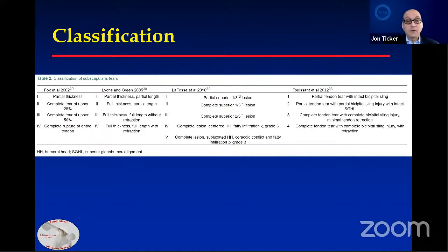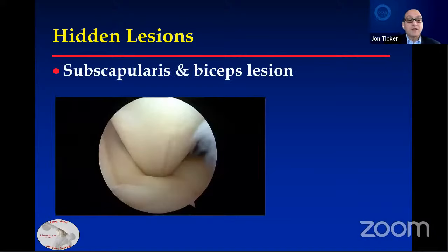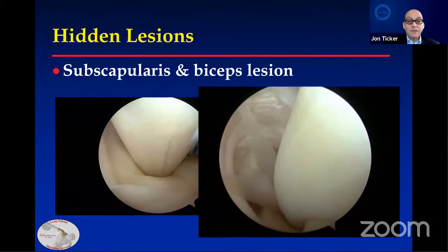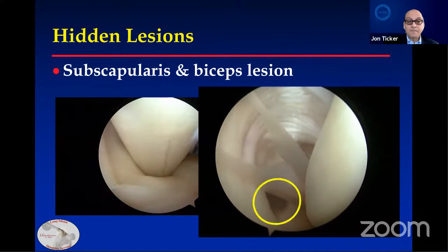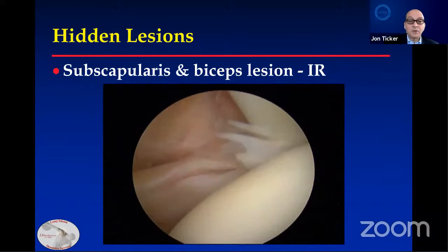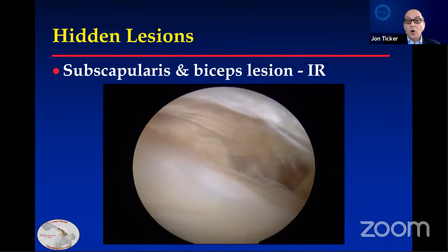Hidden lesions are important to identify. Looking at the biceps tendon into the groove — to the left is the subscapularis. You can see a little fraying under the biceps, which we would typically leave alone. But as you go down into the groove, anterior to the biceps tendon, you're going to see a small defect — the so-called hidden lesion. This is a very small one, but I can't imagine it's going to get smaller; it's only going to get larger. Here's another case where there's a seemingly innocent split in the subscapularis, but if you internally rotate and look through that split more laterally, you're going to see the biceps tendon — this requires treatment as well.